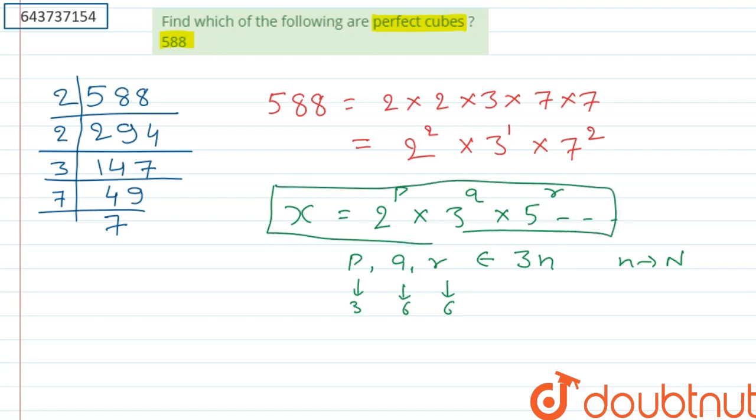But here in this given number, 588, the power of 2 is 2, 3 is 1 and 7 is 2. So clearly 588 is not a perfect cube.